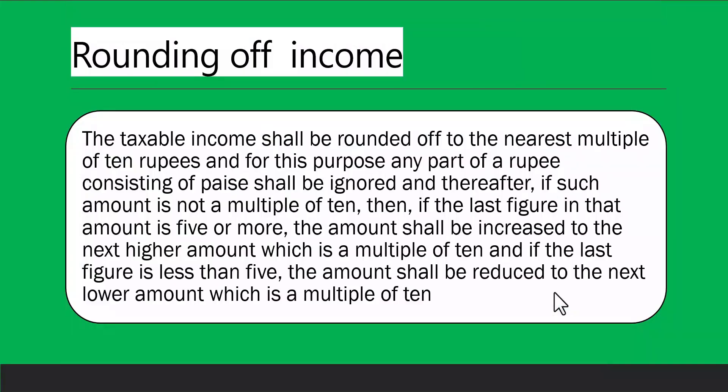Rounding off of income: the taxable income shall be rounded off to the nearest multiple of 10 rupees. Any paise shall be ignored. If the last figure is five or more, the amount is increased to the next higher multiple of 10; if the last figure is less than five, the amount is reduced to the next lower multiple of 10.